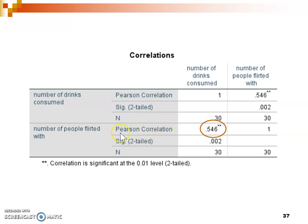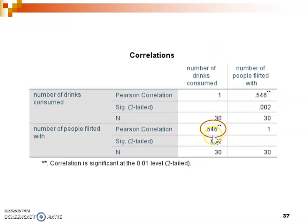Whatever the Pearson correlation value is in the table, that is your R. Make sure you're looking at the right cell — the combination of your two variables. We're looking at the combination of number of drinks consumed and number of people flirted with. It gives you the information twice, but look for that combination in the Pearson correlation row. Our actual calculated value for the Pearson correlation is 0.546.